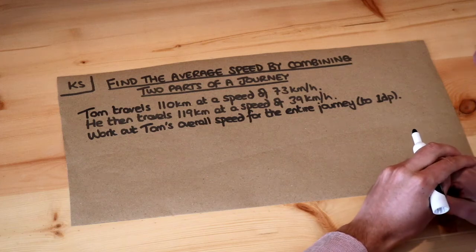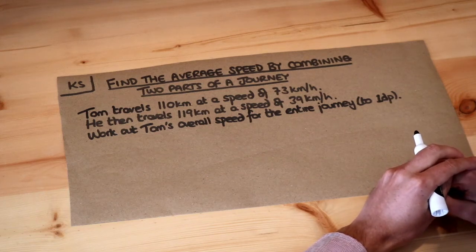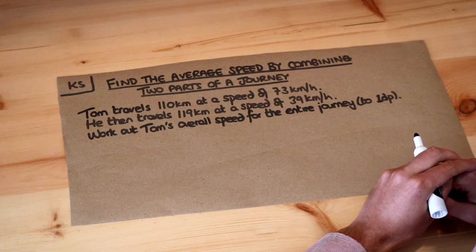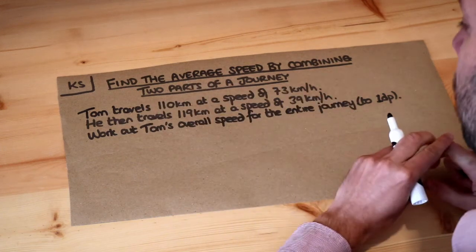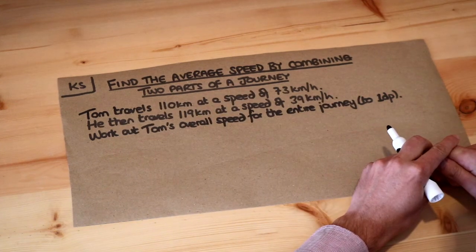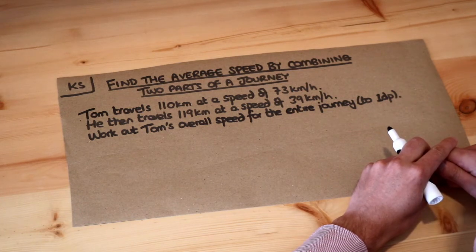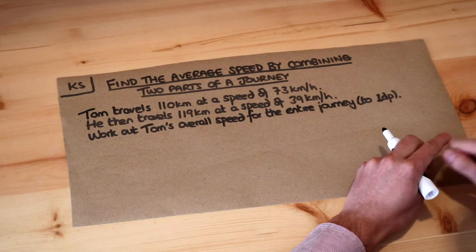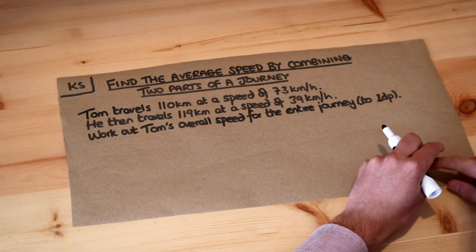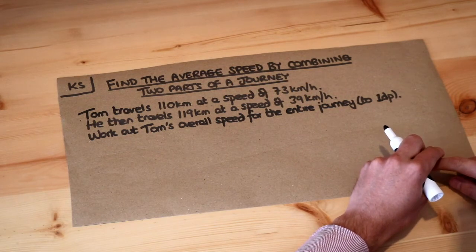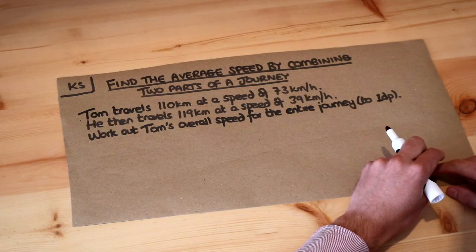Hello and welcome to this Dr. Ross Masskey skill video on finding the average speed by combining two parts of a journey. Tom travels 110 kilometers at a speed of 73 kilometers per hour, then travels 119 kilometers at a speed of 39 kilometers per hour. Work out Tom's overall speed for the entire journey.